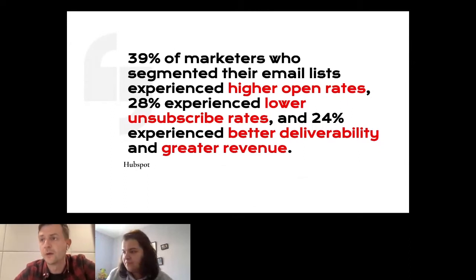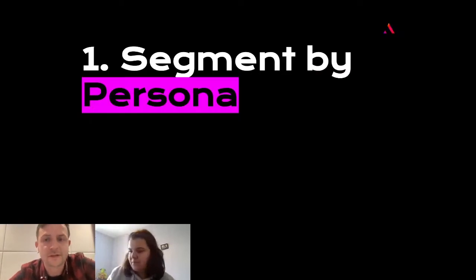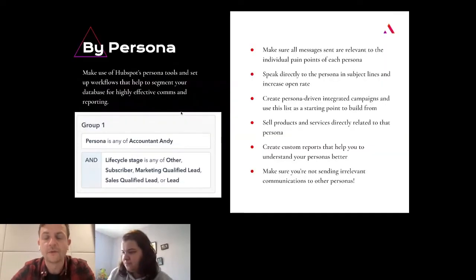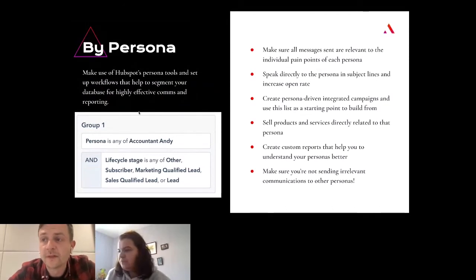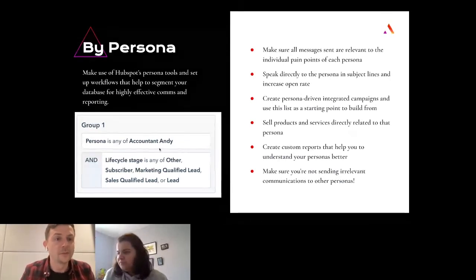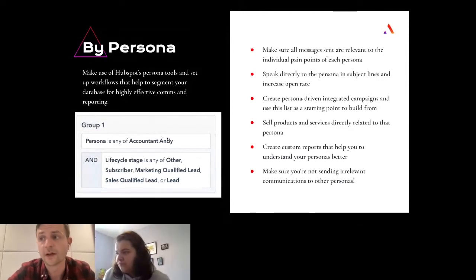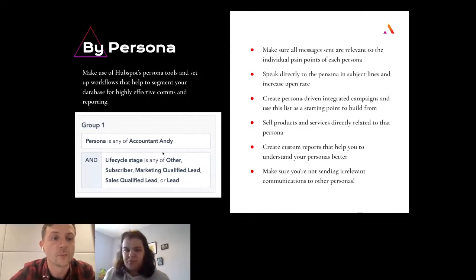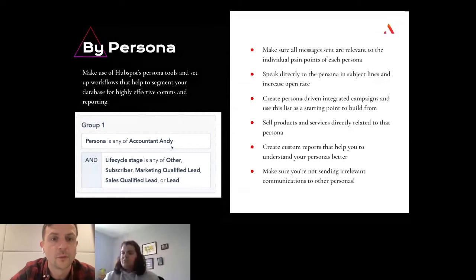I'm going to jump into the first of the five: segment by persona. I'm hoping most people have done persona work before. When we talk about segmenting by persona, that's a semi-fictional representation of who you're trying to sell to, helping you build up a picture of what marketing communications you want to send to different types of customers. I've got an example set up for one of my clients — one of their personas is Accountant Andy — but they also sell to property managers and others in that industry. We've set up a basic list in HubSpot where the persona is 'any of Accountant Andy,' driven by a workflow based on job titles that tags the contact record with that persona.